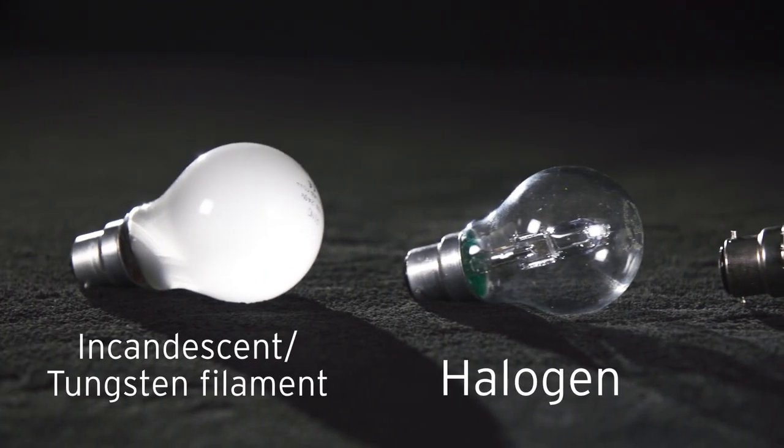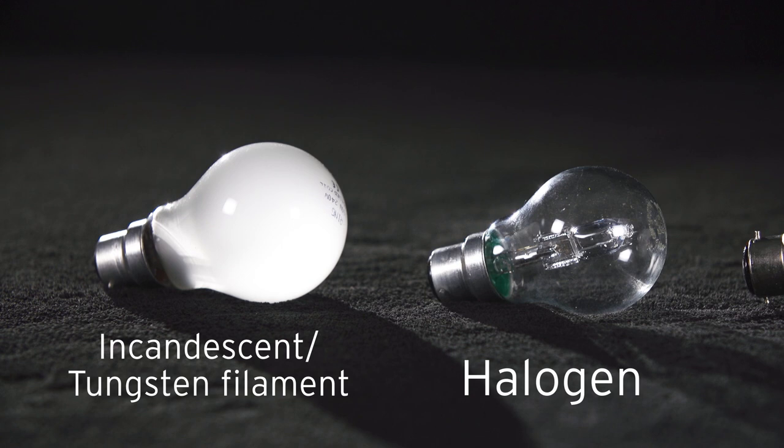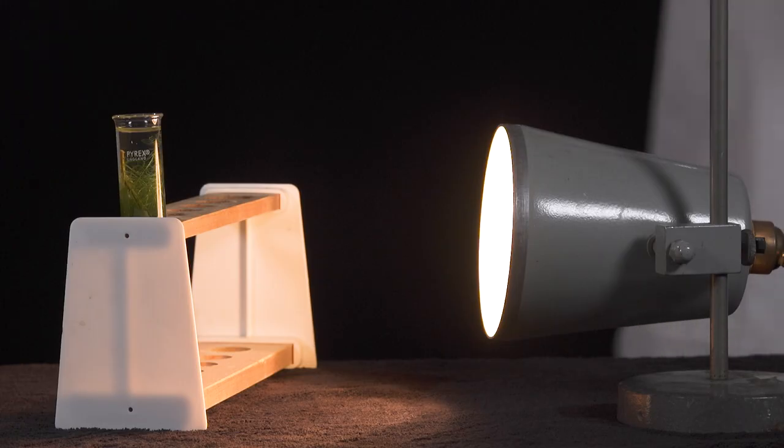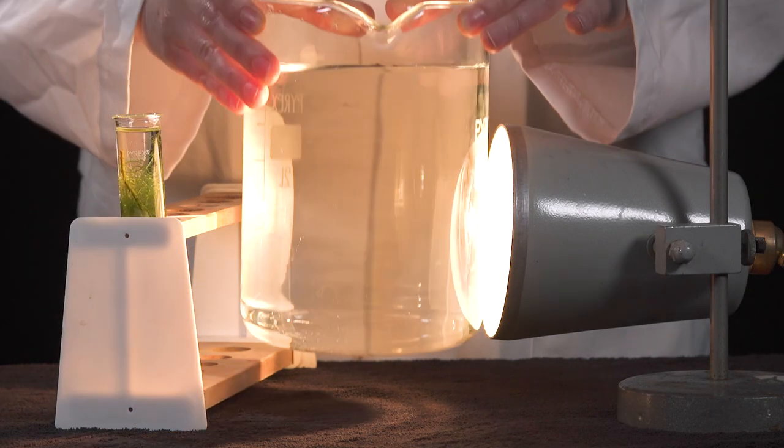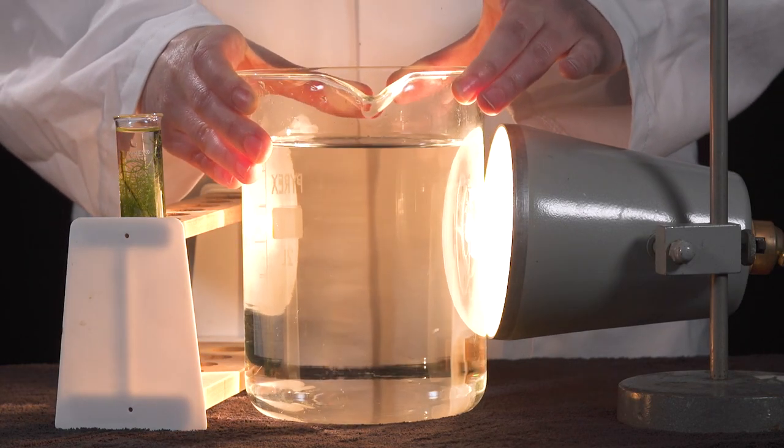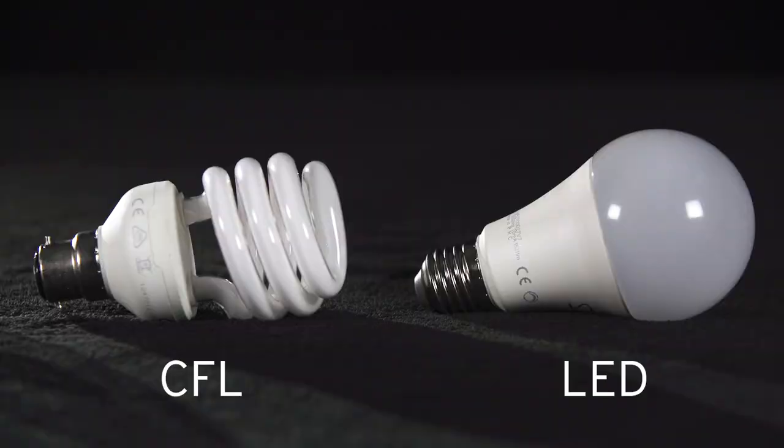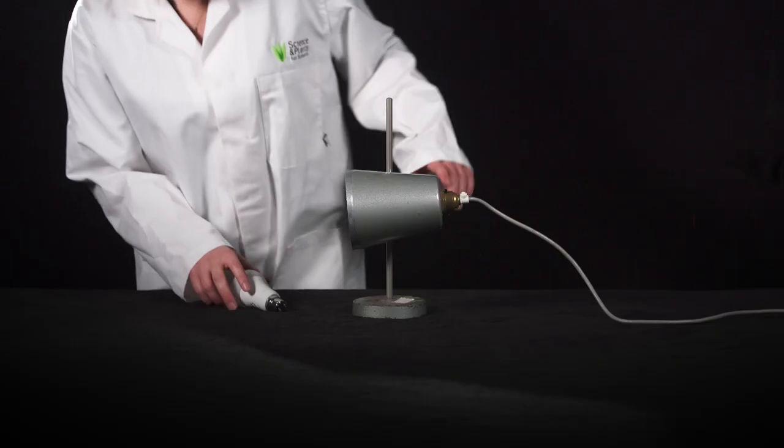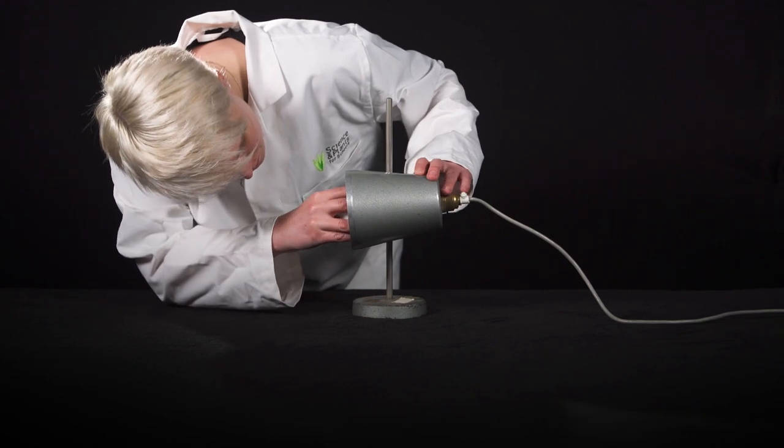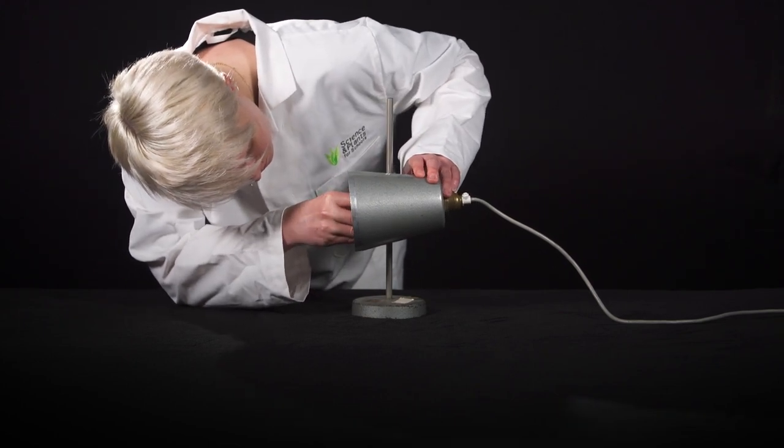You can use any type of light bulb as long as it is bright enough. Tungsten filament or incandescent bulbs and halogen bulbs will need a heat sink between the pondweed and the lamp to reduce heating effects. CFL, energy saving or LED bulbs won't need a heat sink. You can fit these bulbs to the ordinary desk lamps you already have in your lab.